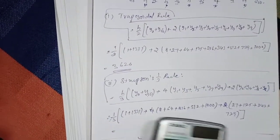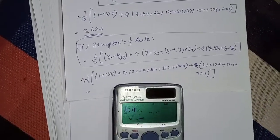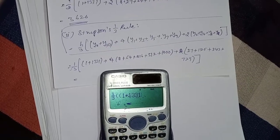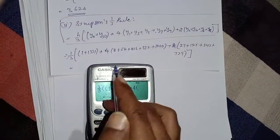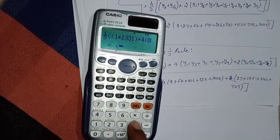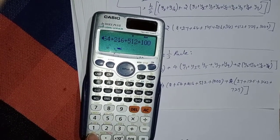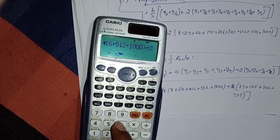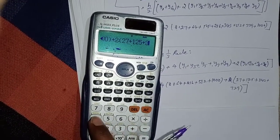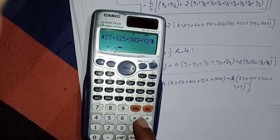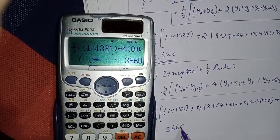Using the calculator: (1/3) × [1 + 1331 + 4(8 + 64 + 216 + 512 + 1000) + 2(27 + 125 + 343 + 729)]. Press equals — the answer is 3660. This is the Simpson's 1/3rd rule answer.